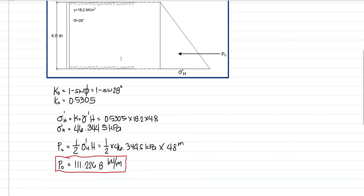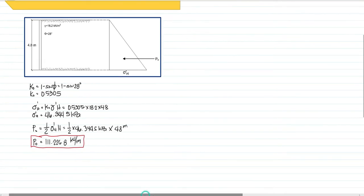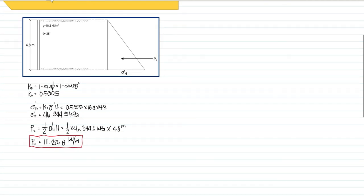Alternatively, we can solve it using the principle of integral calculus. Let's take the pressure diagram. We know we will place it on a certain coordinate axis. So this will be coordinate 0,0. So, the coordinate here will be a value 0,4.8 because that's the height of the retaining wall. Then the coordinate here will correspond to sigma prime h and 0. So that will be 46.3445, 0.